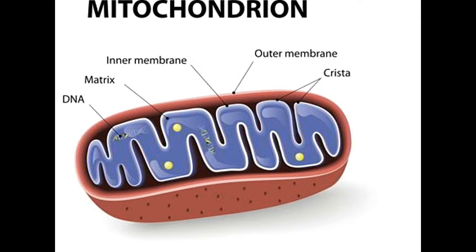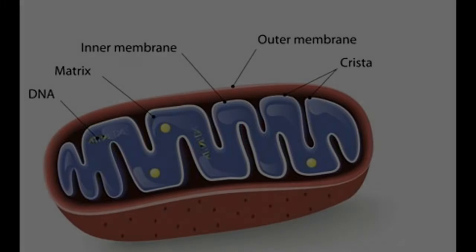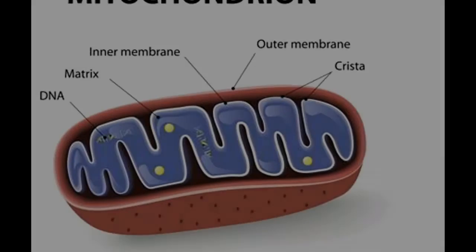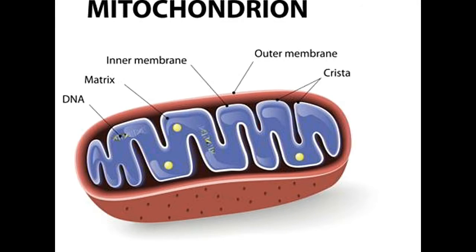Pentadactyl limbs: One similarity among primates — mammals with hands — and non-primate mammals is that most of them have five digits on their forelimbs and hind limbs. But this should not be taken as a sign of their evolutionary relationship, as many primitive ancestors of mammals, including dinosaurs and amphibians, showed the same property.